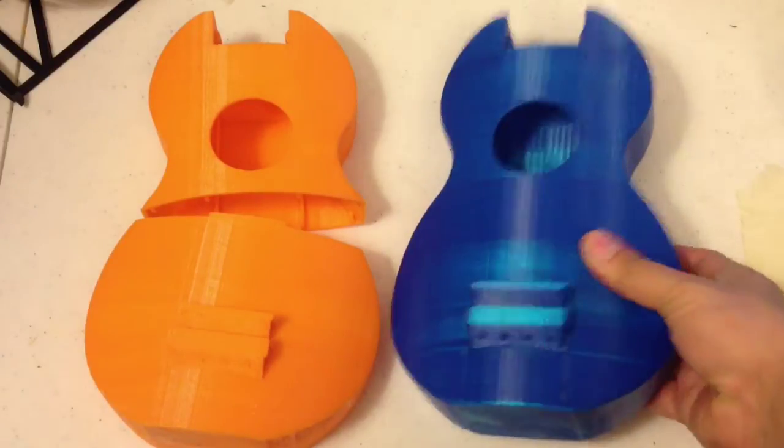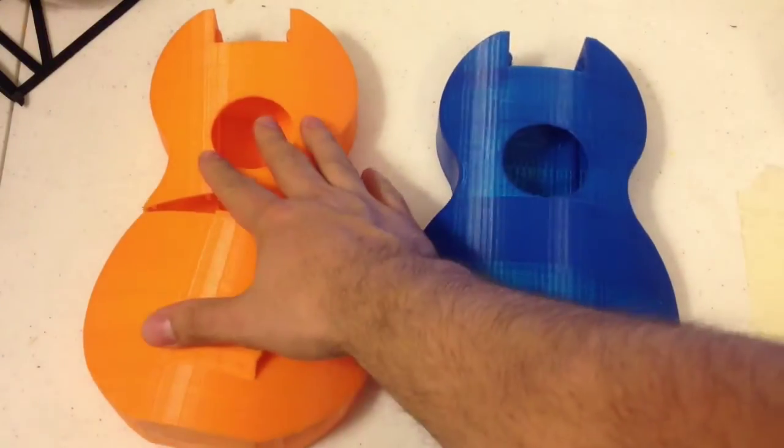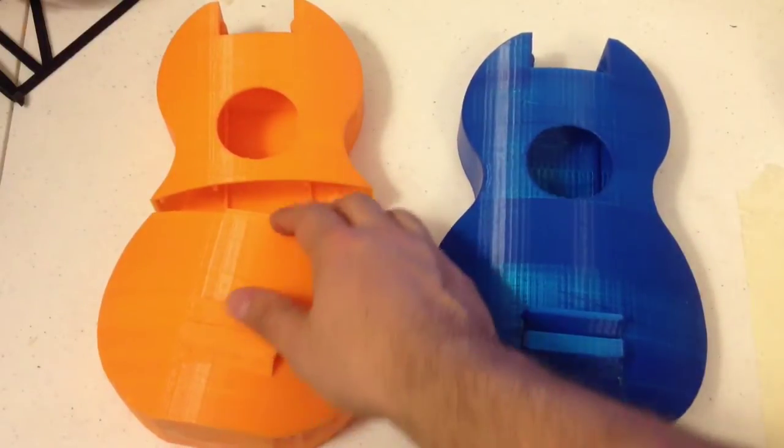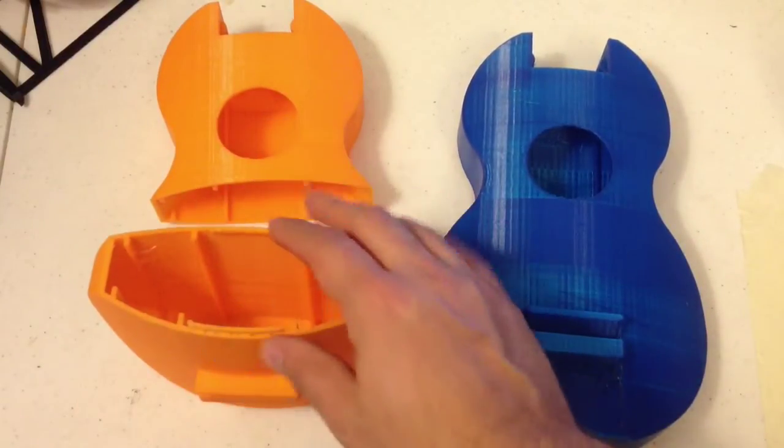When printing the body, whether it's the one-piece or two-piece, I use a 50% fill with a perimeter of four passes.